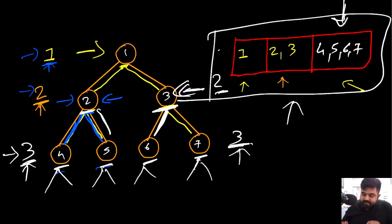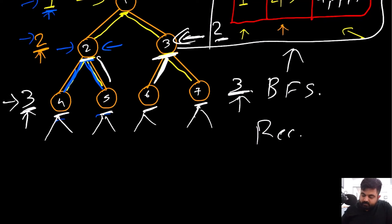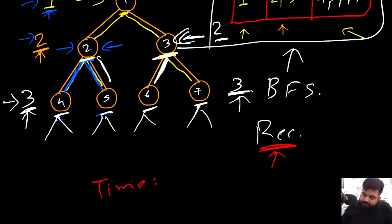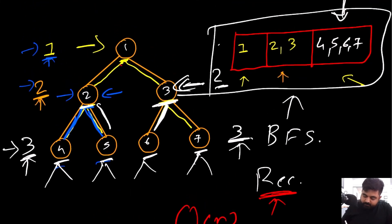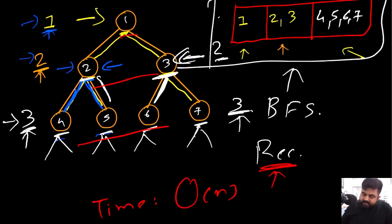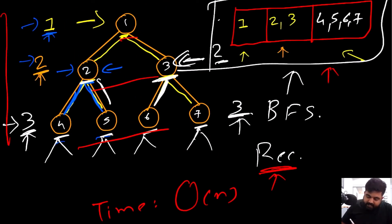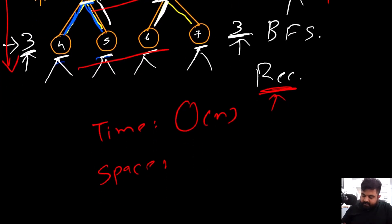We solved this using a breadth first search done recursively, though it could also be done iteratively. You can discuss the strategy with your interviewer — nine out of ten times they'll ask for the recursive approach since it requires much less code. The time complexity is O(N) where N is the number of nodes. The space complexity is O(H) where H is the height of the tree, due to the recursive call stack.